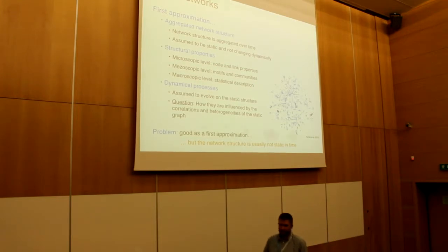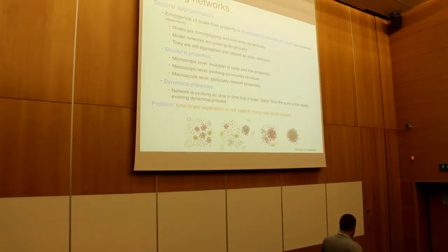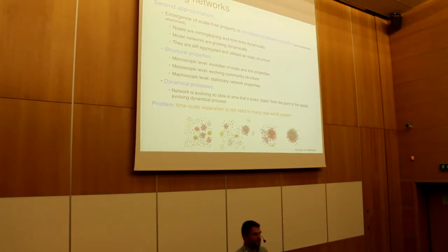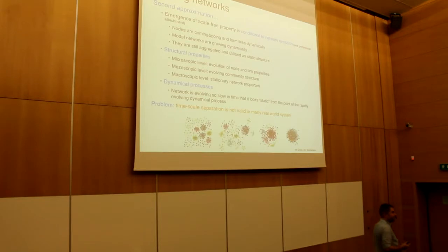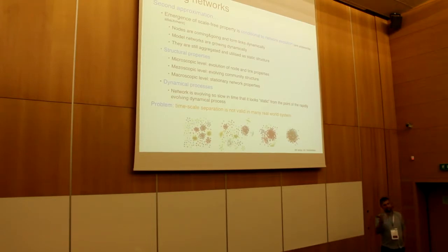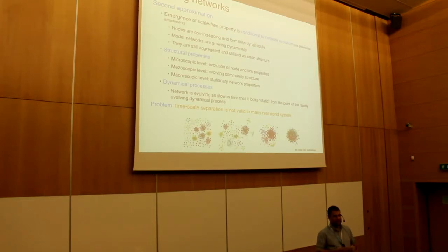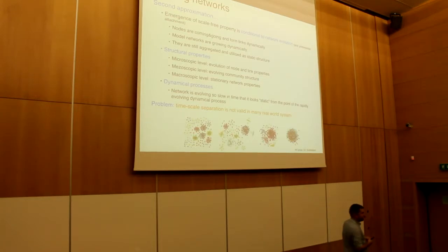The second step, after static networks, was thinking about evolving networks. A good example is the observation of Barabási, who realized that in order to define a model generating a scale-free network, we need two properties: preferential attachment, and that the network is evolving as a function of time. At this level, we are interested in how links are created and deleted, and how nodes come and go. Somehow the network has a temporal evolution, but it is still slow, because we are not speaking about direct interactions but about the existence of a link.